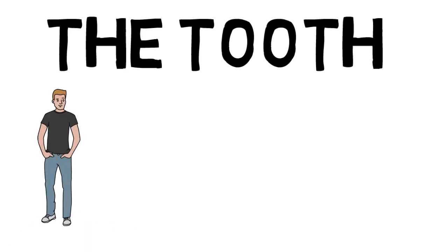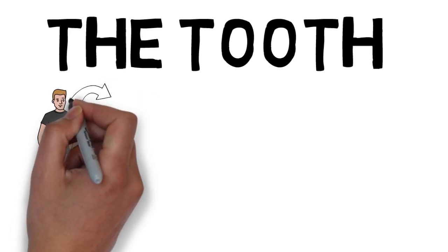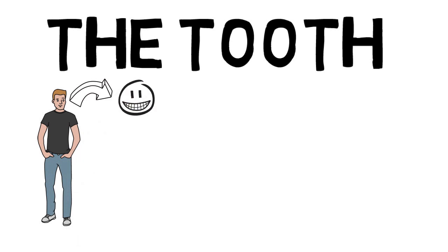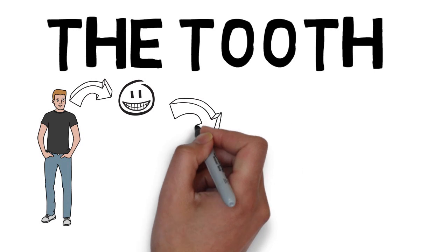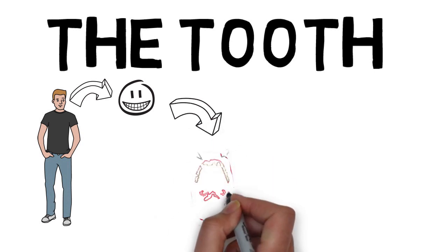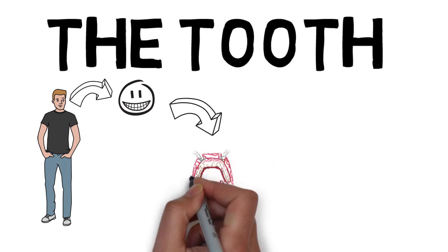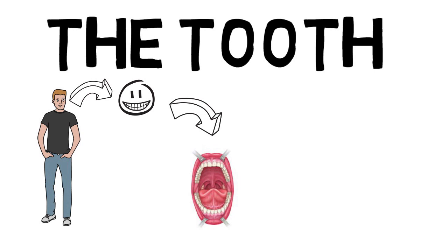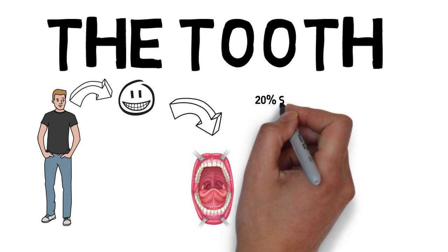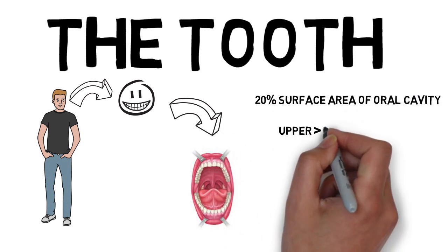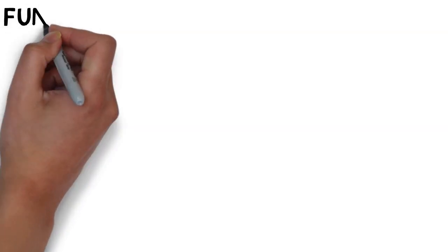Whenever we look inside a person's mouth, we notice that the teeth occupy almost 20% of the entire surface area. The rest is occupied by your tongue, your palate, and the other structures in your oral cavity. The upper jaw occupies more space than the lower jaw — this is natural, as the upper jaw is larger and the upper teeth occupy more space than the lower teeth.